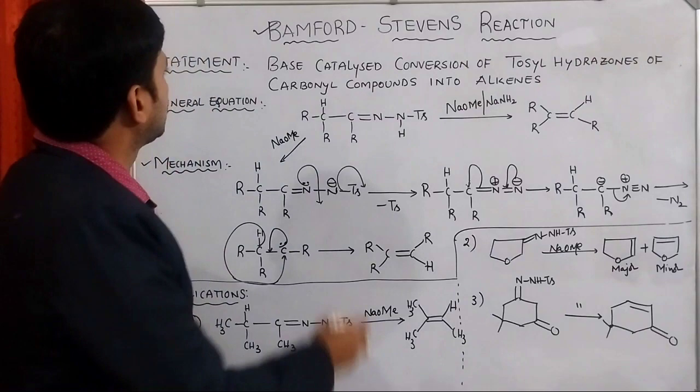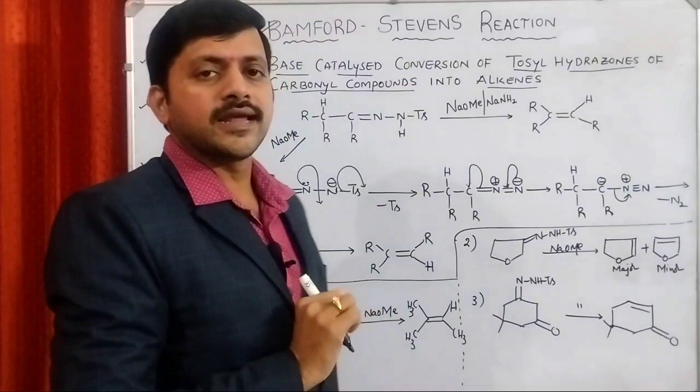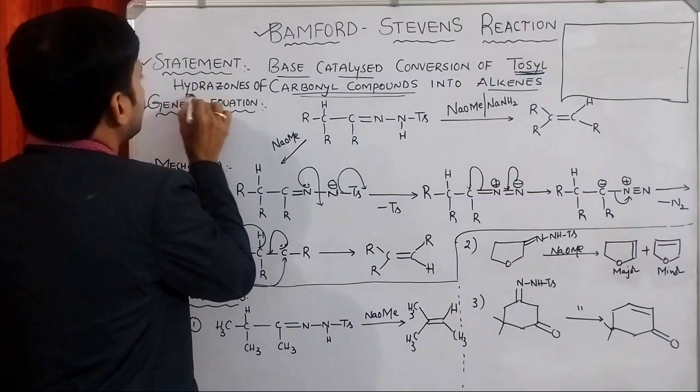It is a base catalyzed conversion of tosyl hydrazones of carbonyl compounds into alkenes. This reaction is useful for the synthesis of alkenes. We should have a focus on the reactants. The reactants are tosyl hydrazone of carbonyl compounds.